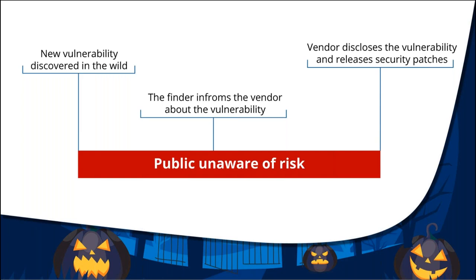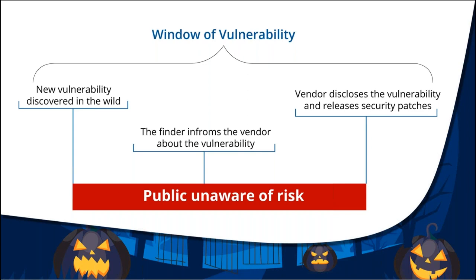The good guys, once they discover the vulnerability, inform the vendor and withhold all details for a reasonable period. Once the vendor becomes aware, they quickly work to release a security patch. During this period, vulnerability details are kept unpublished, since that data would make attackers aware and accelerate their process of developing an exploit. This period is called the window of vulnerability — the time between discovery of a vulnerability and when a fix is released. During this period, the end user also remains unaware of the risk.